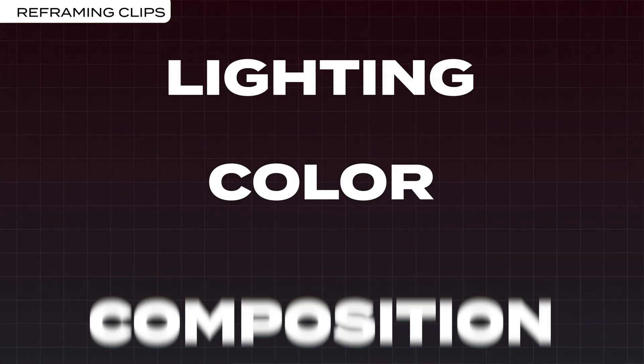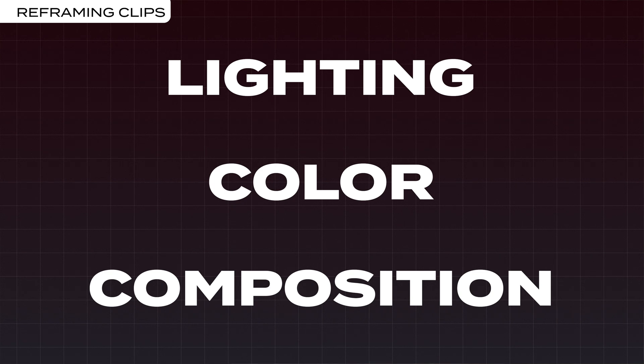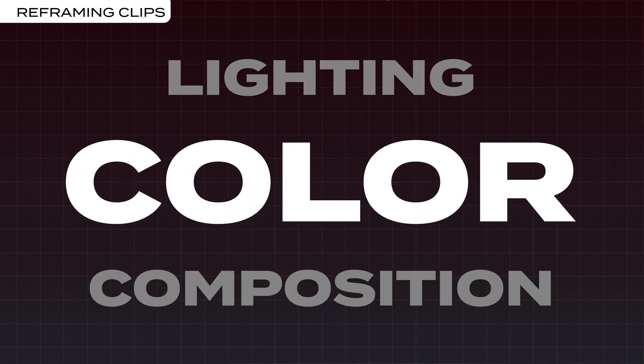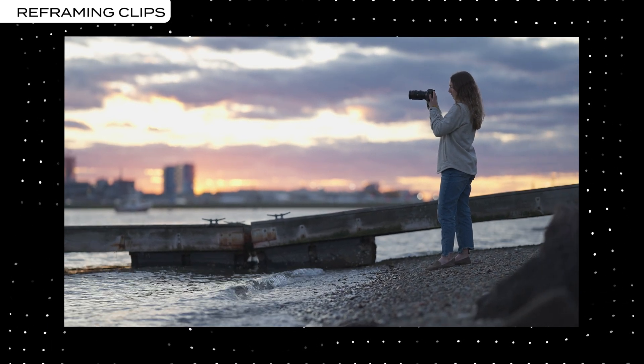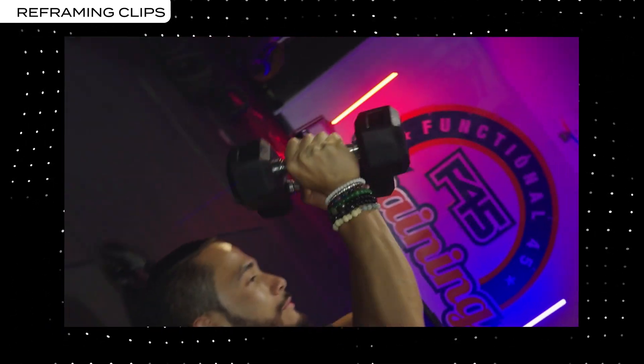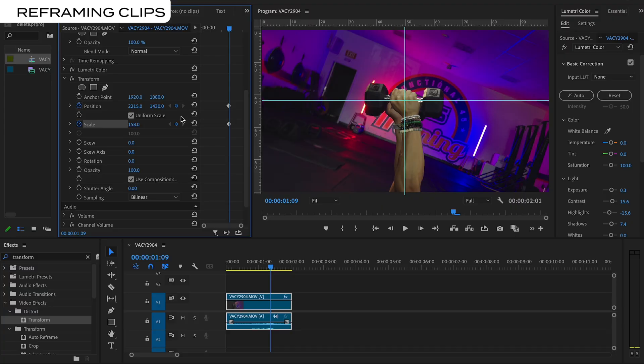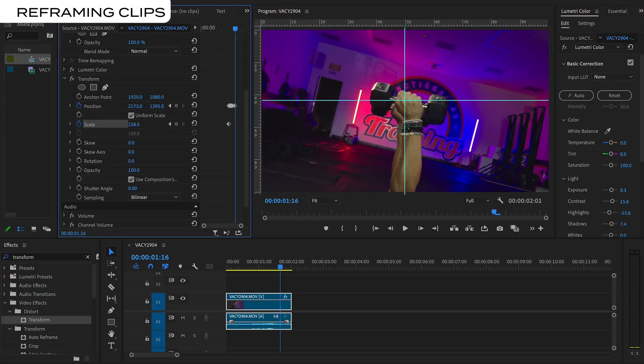Mistake number two is not reframing clips to enhance the composition. When it comes to measuring the cinematic quality of a shot, it really comes down to three things: lighting, color, and composition. Most beginners hyper focus on color grading when they start, and that's fine because it's a powerful skill to develop, but something almost everyone overlooks is how much you can improve a clip with a slight adjustment of the scale, position, and rotation. Transforming this to this is nothing more than a simple process of reframing — and by the end of the video, you'll know exactly how to get that effect. That was shot on an iPhone, by the way.